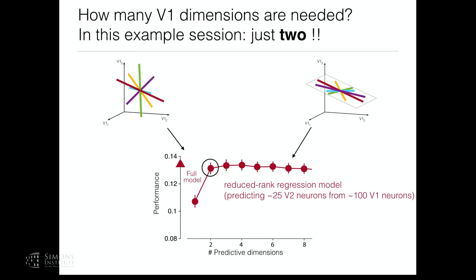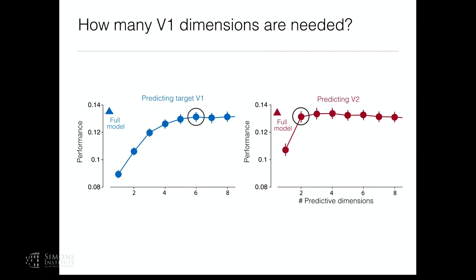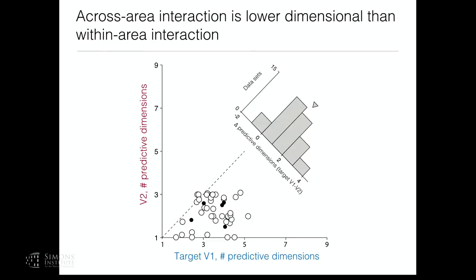One might think the result is trivial because V2 activity itself is lower dimensional — but the opposite is true: V2 activity is actually higher dimensional than the predicted subspace. Looking at dimensionality of target V1 population versus how many predictive dimensions are needed, in V1-to-V1 it lies nicely on a diagonal — you need as many predictive dimensions as there are dimensions in the activity. But for V1-to-V2, the number of predictive dimensions needed is much lower than the intrinsic dimensionality of V2 activity.